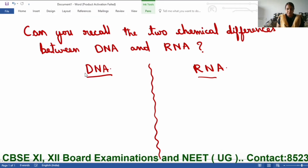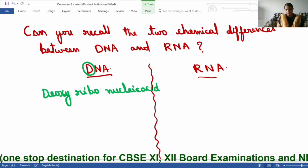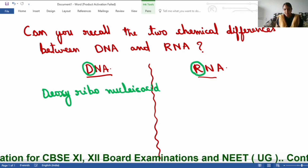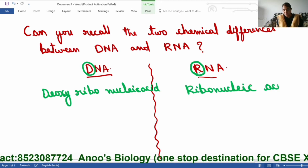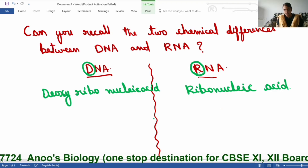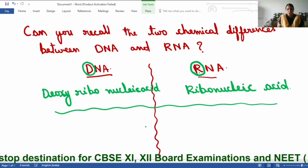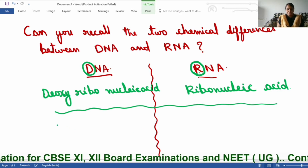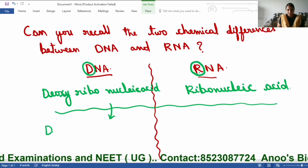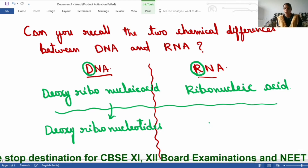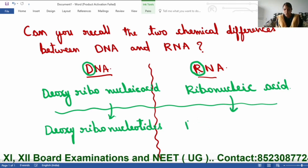The name DNA itself says that DNA is deoxyribonucleic acid, and the name RNA itself suggests that RNA is ribonucleic acid. So deoxyribonucleic acid is made up of deoxyribonucleotides, and ribonucleic acid is made up of ribonucleotides.